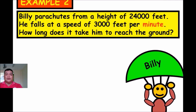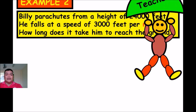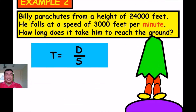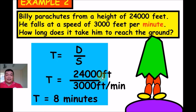Example 2: Billy parachutes from a height of 24,000 feet, falling at a speed of 3,000 feet per minute. How long does it take to reach the ground? Time = Distance ÷ Speed. Distance is 24,000 feet and speed is 3,000 feet per minute. Divide 24,000 ÷ 3,000 — cancel terminal zeros: 24 ÷ 3 = 8. Cancel the unit feet, leaving minutes. It took Billy 8 minutes to reach the ground.